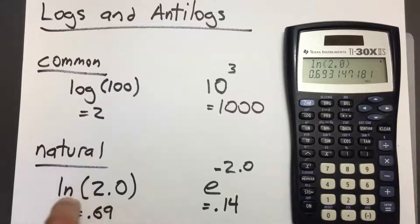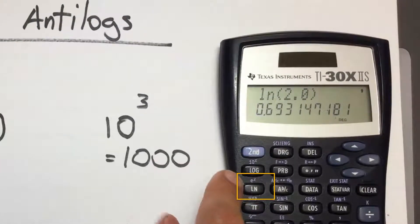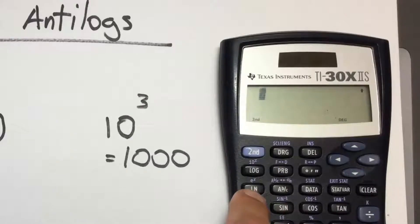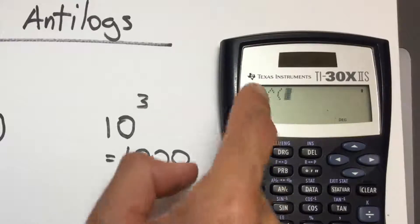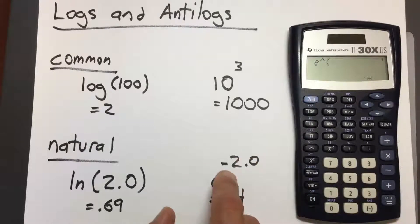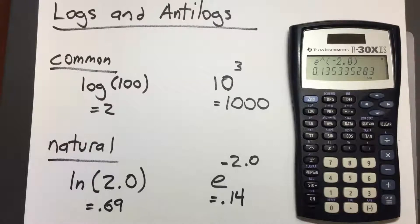To take the anti-natural log, or lowercase e, make sure you don't hit the uppercase e. What we want is the blue text right above LN that says e to the x. Clear the screen, press 2nd, and press the LN key to reach the e raised to the x button. Now enter the number above the e: negative 2.0. Close parentheses and press enter. We get 0.1353, which rounds to 0.14.